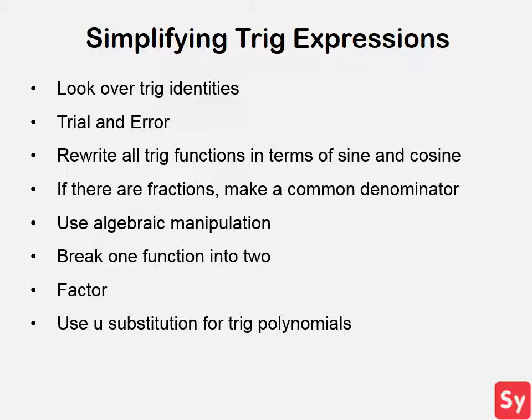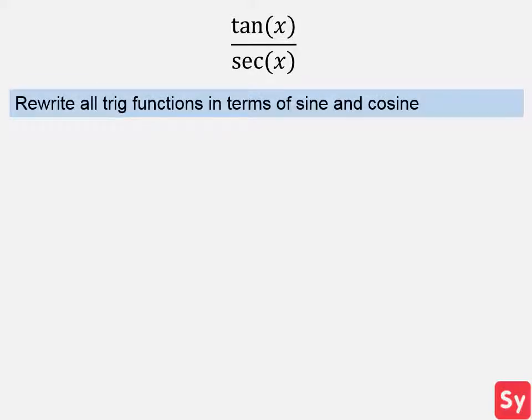Now let's see some examples of simplifying trig expressions. First example, we have tan(x) over sec(x). First, rewrite all trig functions in terms of sine and cosine. Remember that tan(x) equals sin(x) over cos(x) and sec(x) equals 1 over cos(x).